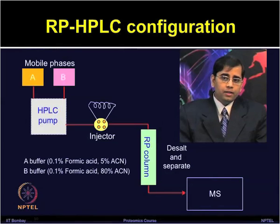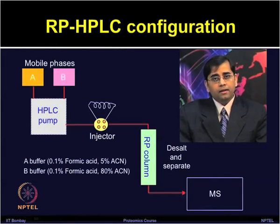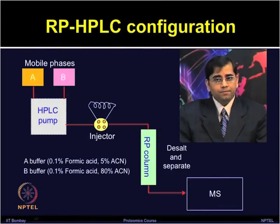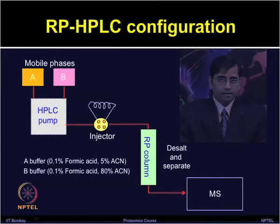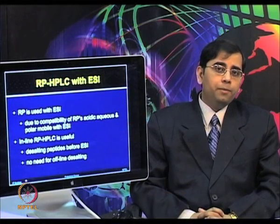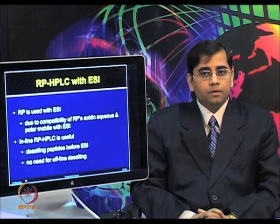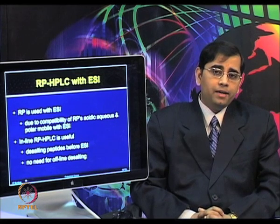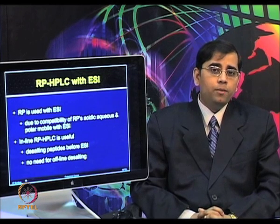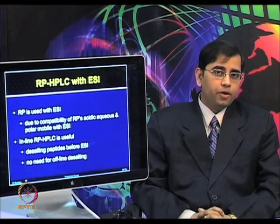Wash the reverse phase with buffer B and then re-equilibrate in A. In this way, the peptides can be separated and prior to MS analysis, it can be desalted so that there is no interference from salt. Reverse phase is most commonly employed with electrospray ionization because of its compatibility of reverse phase acidic aqueous and polar mobile phase with electrospray ionization.